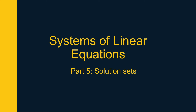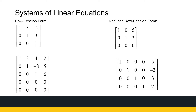In this last section on systems of linear equations, we're going to be looking particularly at solution sets of systems. In the first four videos, we looked at Gaussian elimination, the process of Gauss-Jordan elimination, and how to get solutions from there. So now what we're going to do is just look at what we get after Gaussian elimination and then see what the solution set will be. We're not going to be doing any Gaussian elimination in this video — those are in the previous videos.